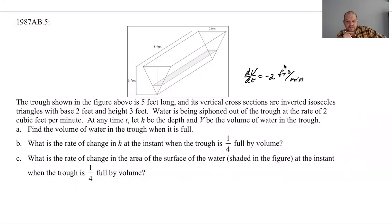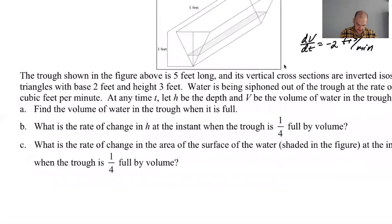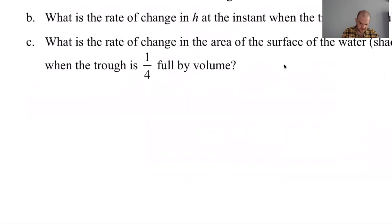Water is being siphoned out at any time t, let h be the depth. So we're given that the depth is h, so at a maximum h will be three but it's somewhere in between zero and three. Find the volume of water in the trough when it's full. Okay, so it's going to be the area of the base.